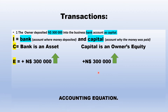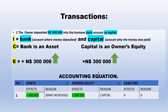On the accounting equation we'll have a table with columns: transaction number, asset, owner's equity, and liabilities. The effect is that asset will increase — reason: bank increased. Owner's equity will also increase — and under owner's equity we write 'capital' as the reason rather than just saying increase or decrease.